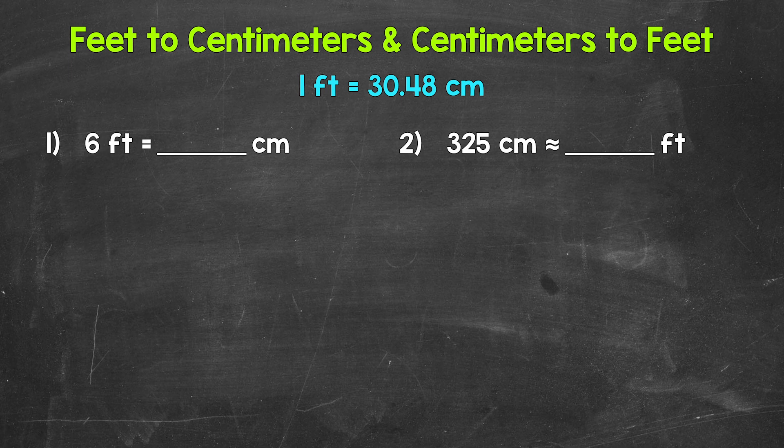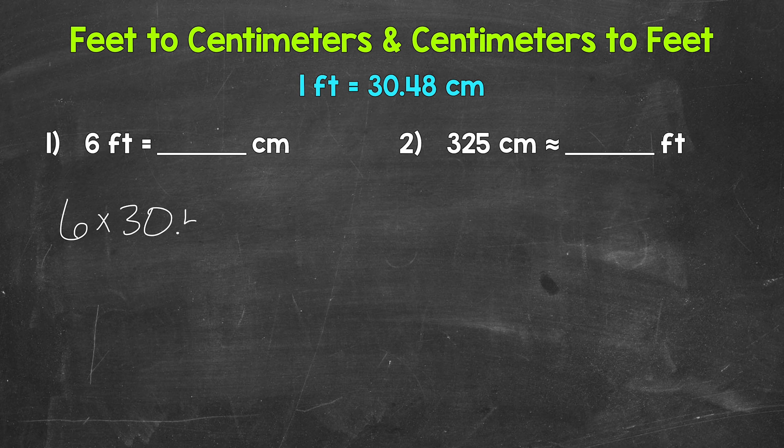Let's jump into a couple of conversions where we will go from feet to centimeters and centimeters to feet. Starting with number one, where we have six feet equals how many centimeters? Well, each foot equals 30.48 centimeters. So we have 30.48 six times. So we need to do six times 30.48.